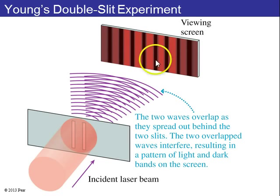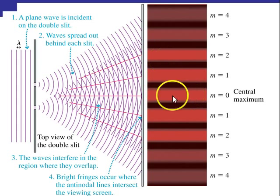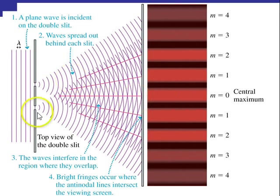A fringe would be a bright fringe or a dark fringe — these stripes. Looking at it from overhead, here are the plane waves of light coming from left to right with wavelength lambda. They hit the slits and then spread out. When they're overlapping, you get this interference pattern. If you look right at the center, the distance from the top slit to the center point of the screen equals the distance from the bottom slit. Since these distances are equal, the same number of wavelengths will be along each path, giving constructive interference — maxima from both slits coincide.